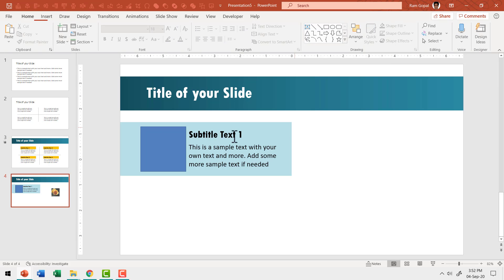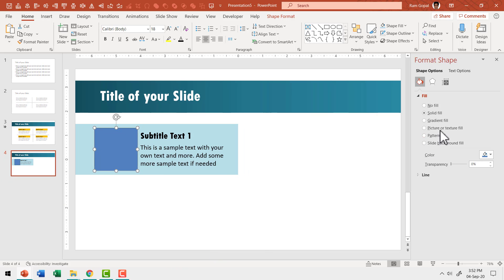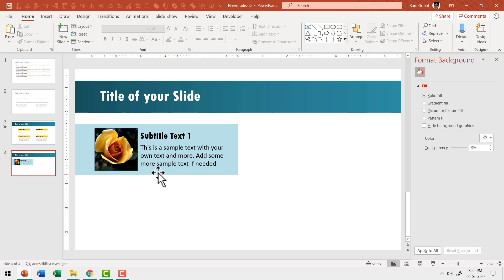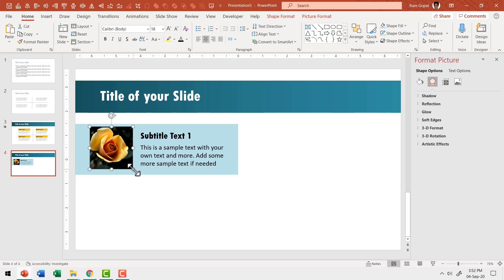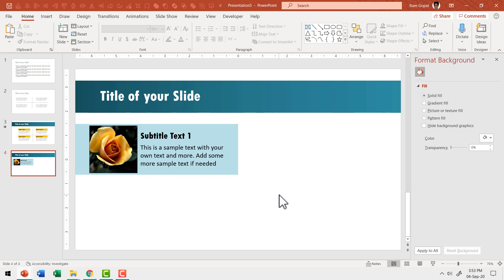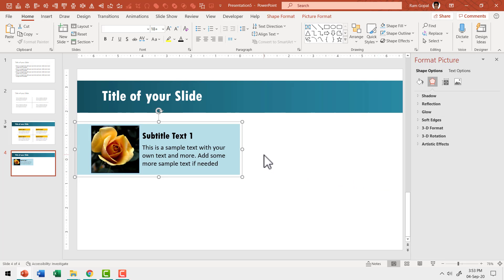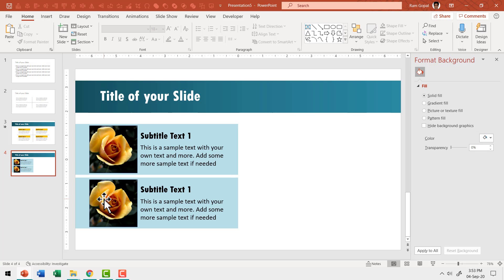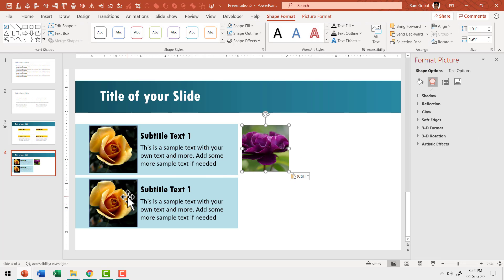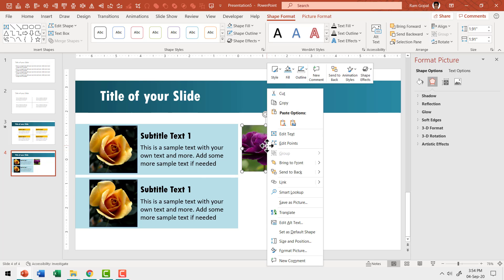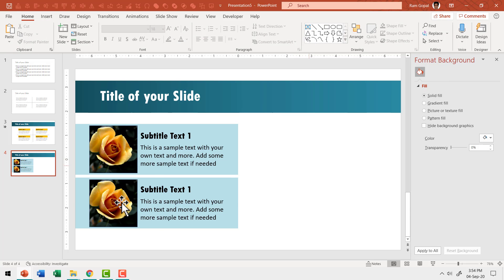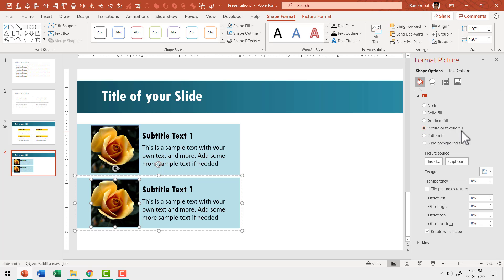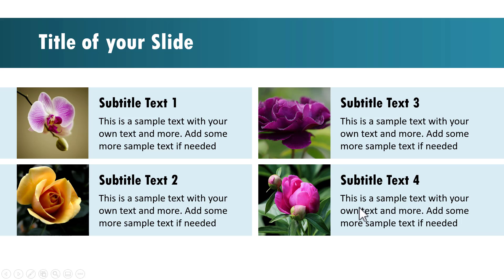I right-click the picture and cut it, then select the shape, right-click, go to Format Shape, go to Picture or Texture Fill, and use Clipboard. Now we have one prototype done. I select everything, press Ctrl+G to group it, then Ctrl+D to duplicate and place the copy alongside. The key advantage of filling a shape with a picture rather than inserting directly is that you can easily replace it — just cut the new picture, select the shape, go to Format Shape > Picture or Texture Fill > Clipboard, and the old photo is replaced with the new one.